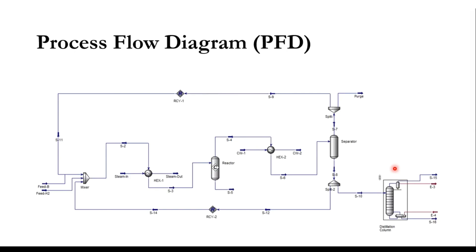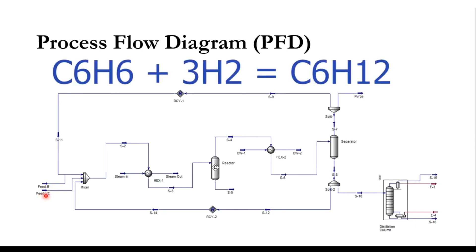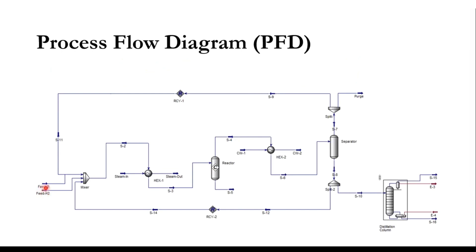This is the overall schematic diagram of cyclohexane production. The feed is benzene and hydrogen — benzene reacts with three moles of hydrogen to produce cyclohexane. These two are mixed using a mixer and then fed to a heat exchanger where the mixture is heated using steam as the heating media.